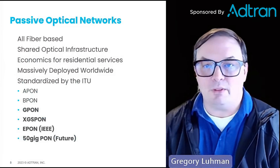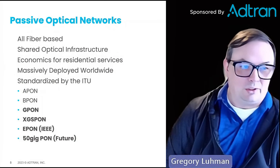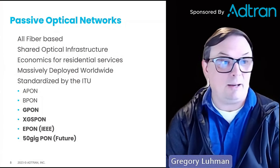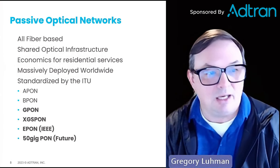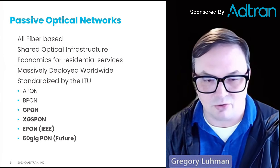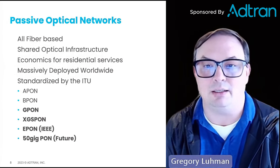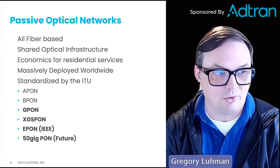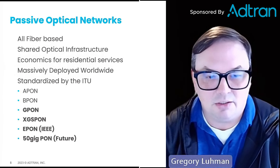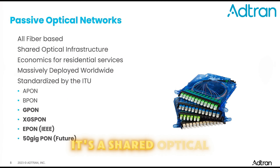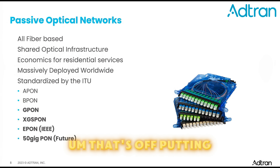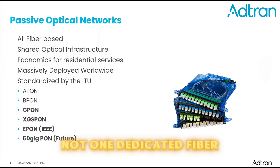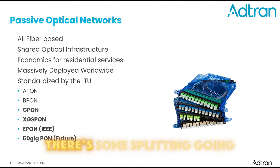The passive optical network — first, it's optical. It's all fiber based. We're delivering fiber to the home. Putting fiber in our telecom networks is all the rage right now. One thing to note: it's a shared optical infrastructure. That's off-putting to some — the shared nature of it. It's not one dedicated fiber going from point A to point B. There's some splitting going on.